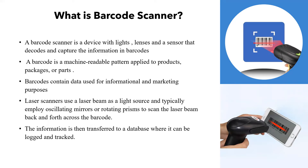Laser scanners use a laser beam as a light source and typically employ oscillating mirrors or rotating prisms to scan the laser beam back and forth across the barcode. The information is then transferred to a database where it can be logged and tracked.